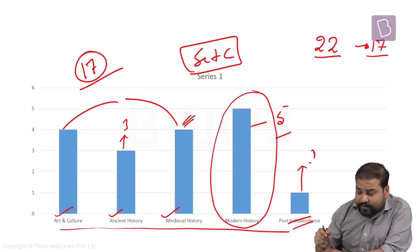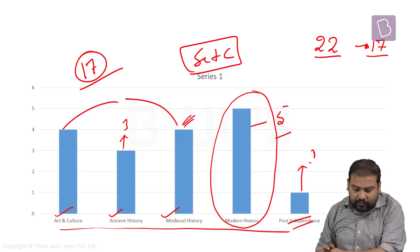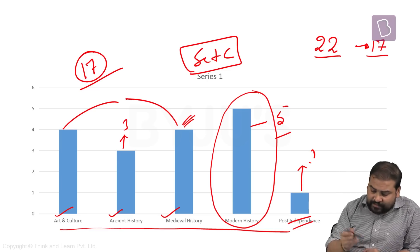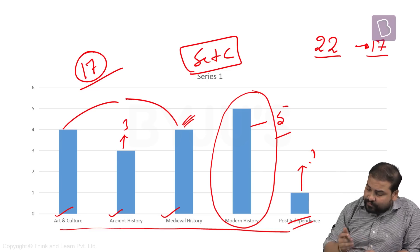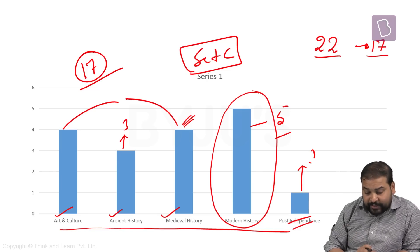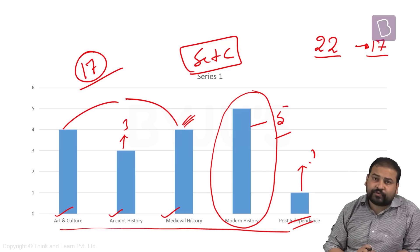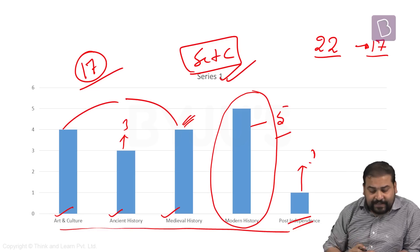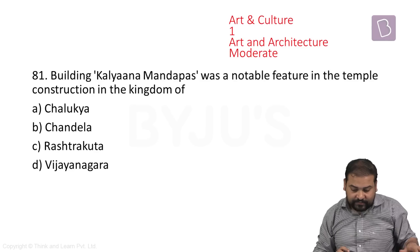This year also there is one question of post-independence. So let's begin one by one. We'll start with art and culture, then go into ancient history questions, then medieval history questions, then modern and finally to the post-independence question. I am looking into Set C and I'll be following that particular set.